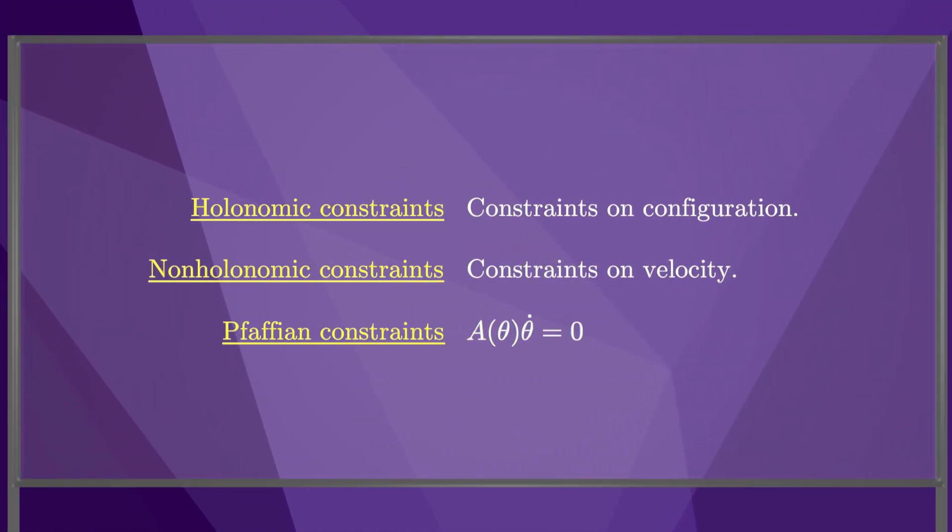To summarize, holonomic constraints are constraints on configuration, non-holonomic constraints are constraints on velocity, and Pfaffian constraints take the form A of theta times theta dot equals zero. Determining whether Pfaffian constraints are actually holonomic configuration constraints, or only non-holonomic velocity constraints, is left to Chapter 13.